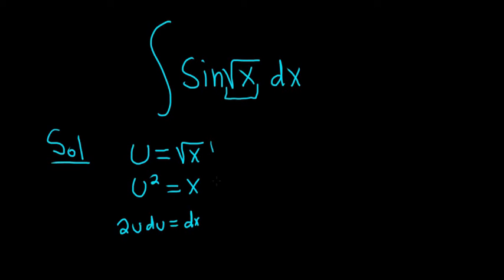And now we can make our substitution. So the dx we can replace with 2u du. So this becomes 2u du. And then here we just have the sine of u.